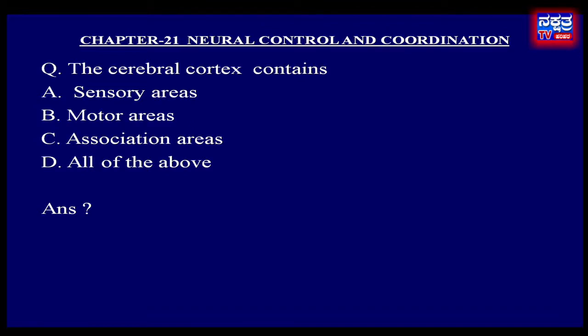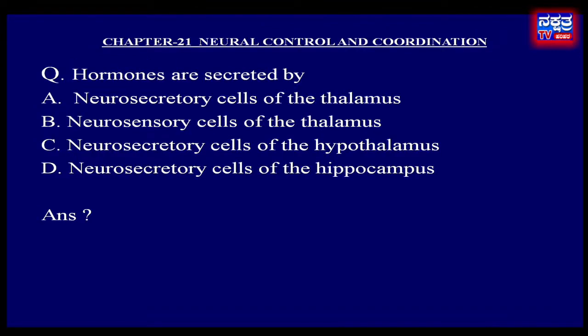Hormones are secreted by: A. Neurosecretory cells of the thalamus, B. Neurosensory cells of the thalamus, C. Neurosecretory cells of the hypothalamus, D. Neurosecretory cells of the hippocampus.